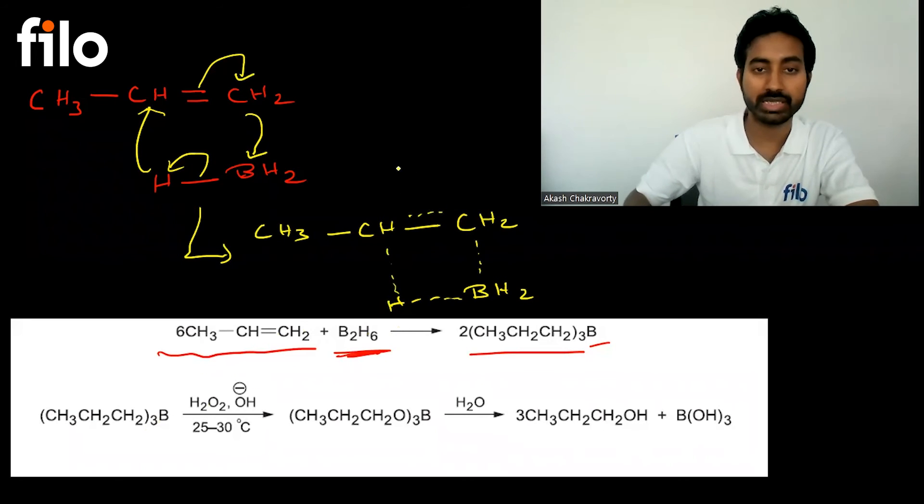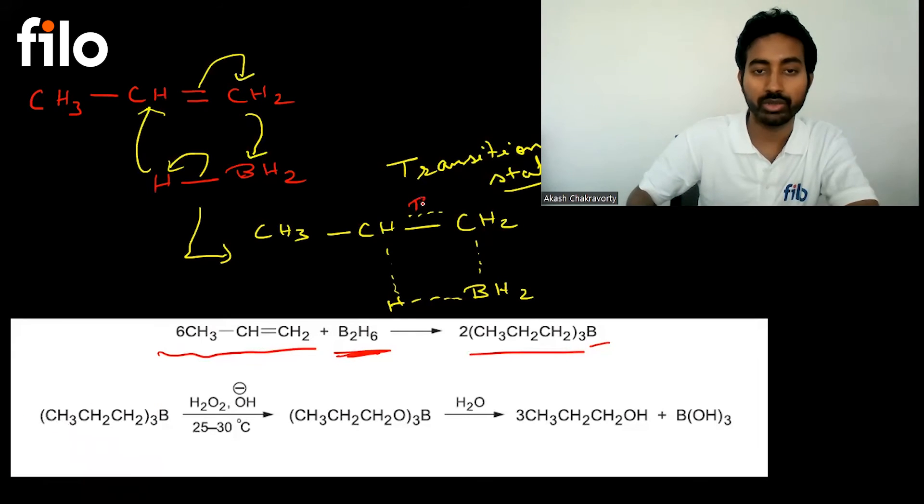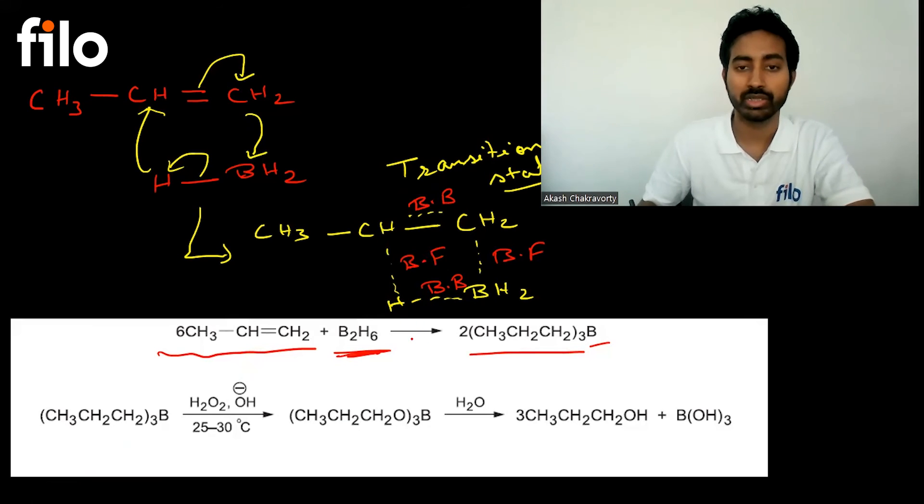Bond breaking and bond formation occur. This is a cyclic transition state. After this transition state, the final product is CH3-CH-CH2-BH2-H. Similarly, this reaction occurs with other alkenes.